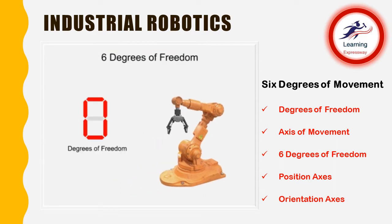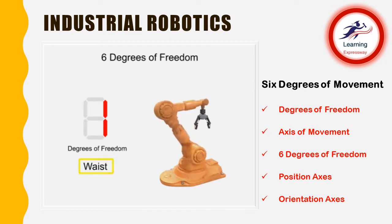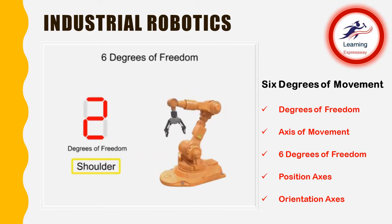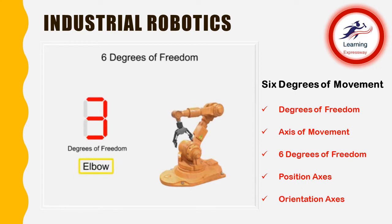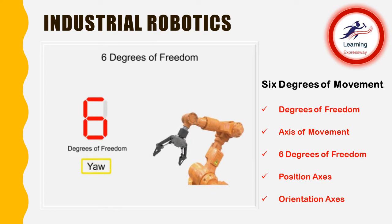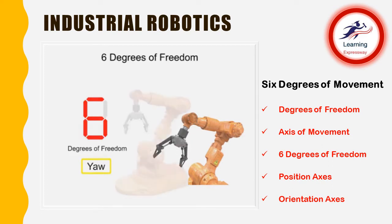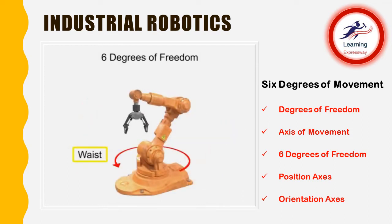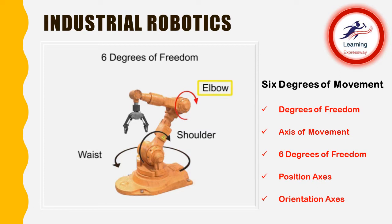It moves along one axis for each of the waist, shoulder, and elbow joints, and along three axes at the wrist using pitch, roll, and yaw. These particular motions help to locate the tool in the work area and are called position axes.